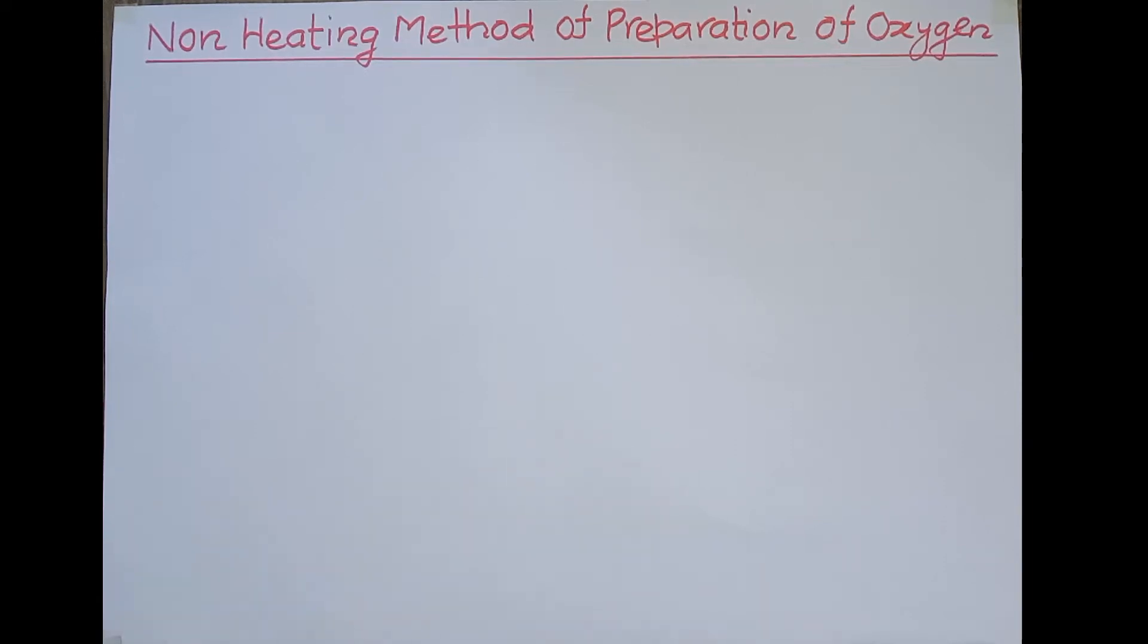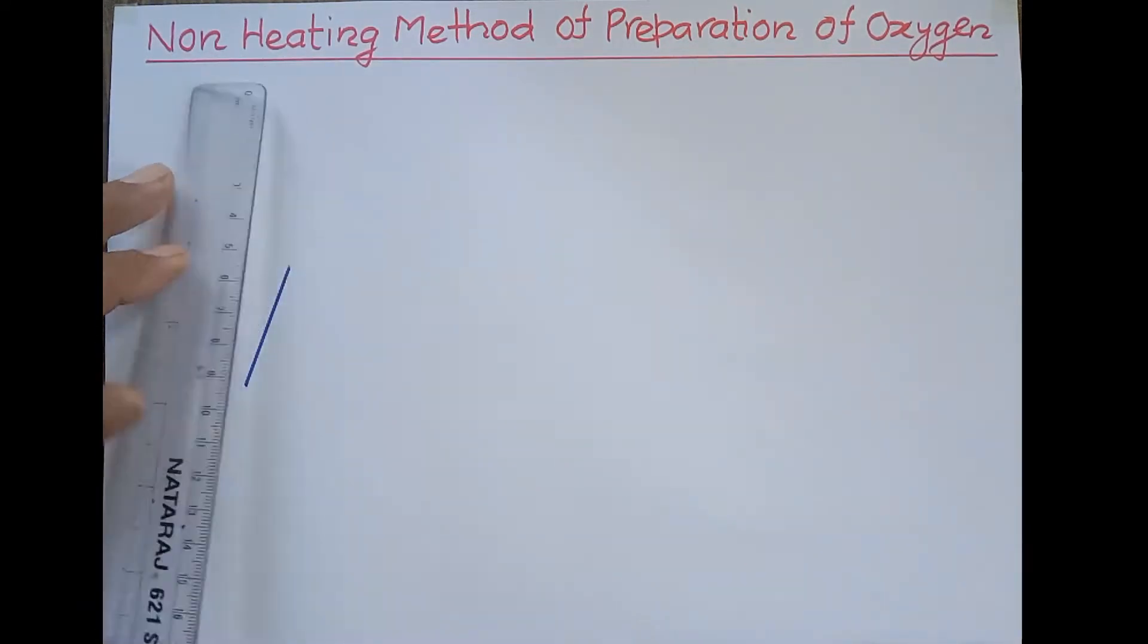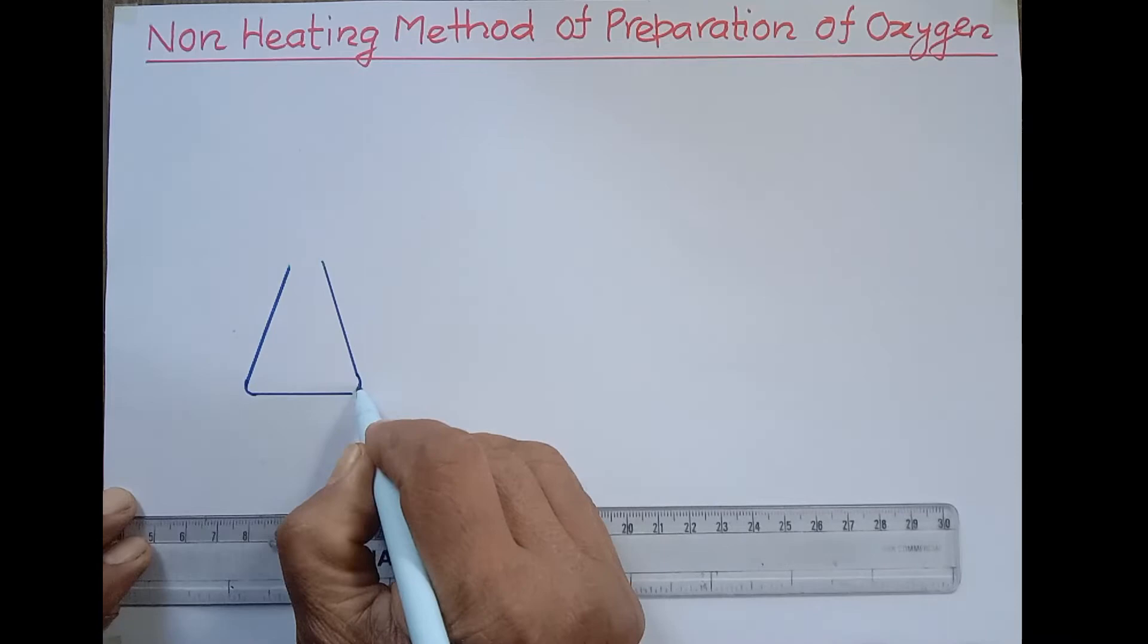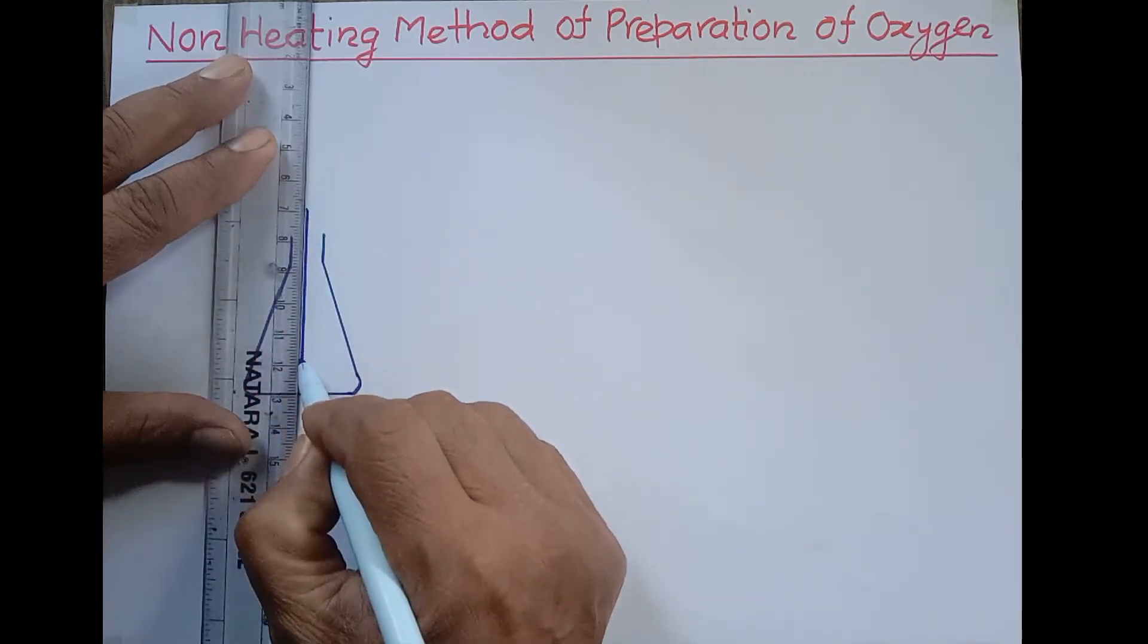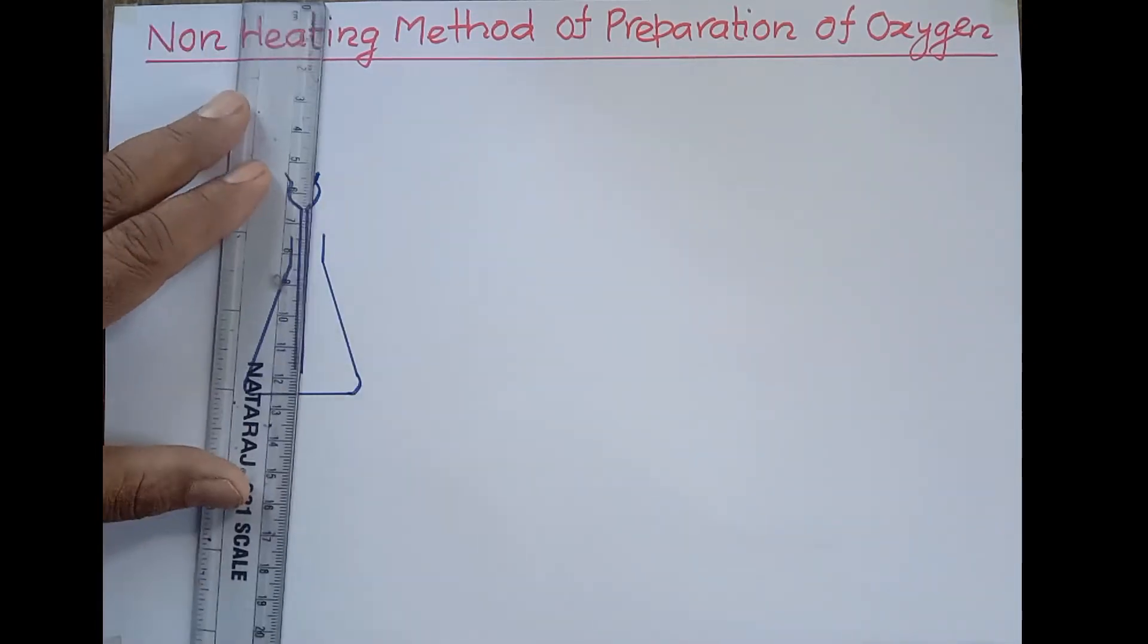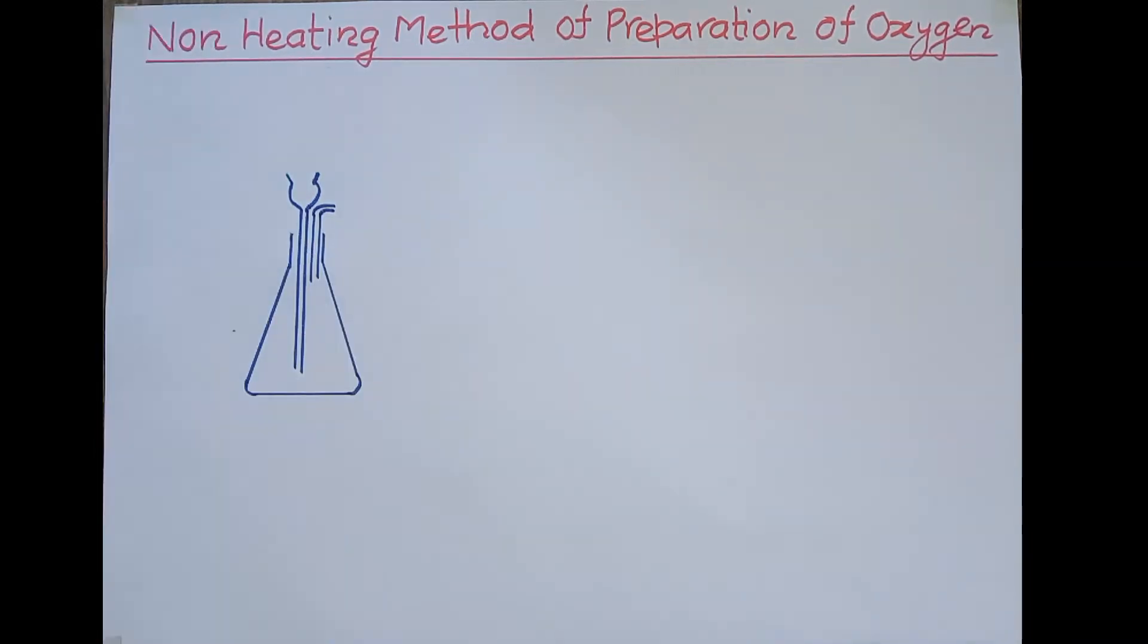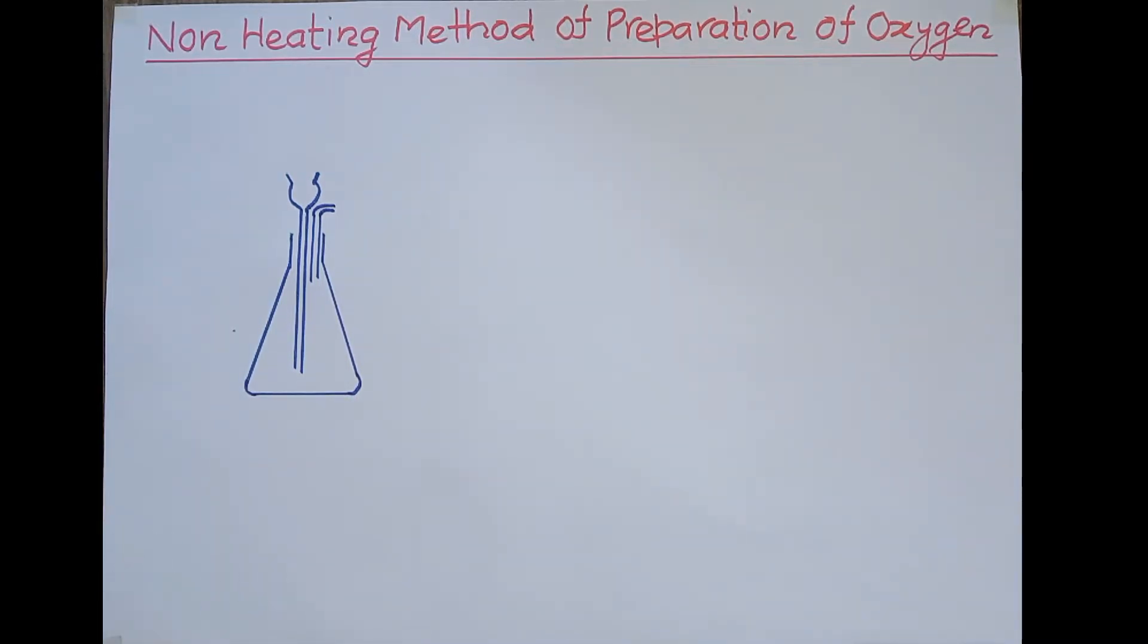I am going to tell you about the non-heating method of preparation of oxygen gas in laboratory. We are going to make a diagram. First, we have to take a conical flask. At the mouth of the conical flask, a thistle funnel is fitted and a delivery tube is fitted with the help of cork.